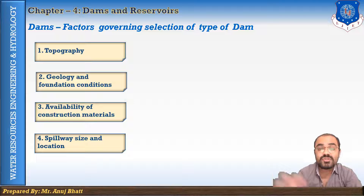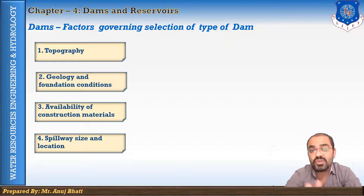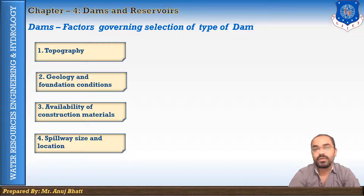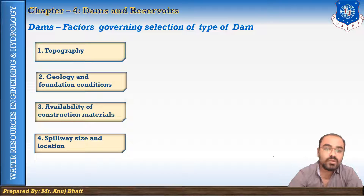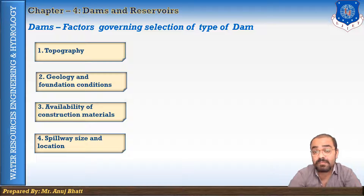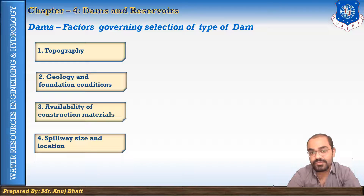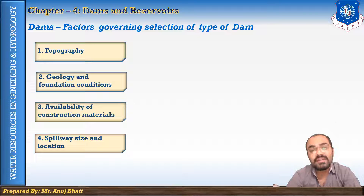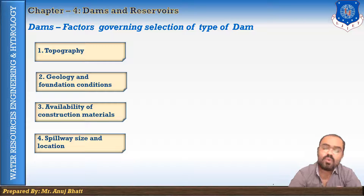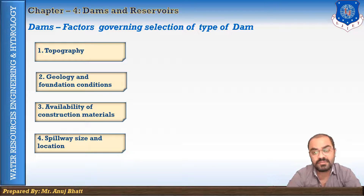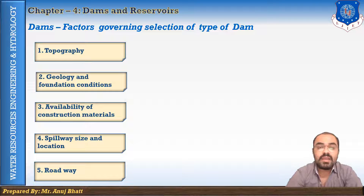The next factor is spillway size and location. A spillway is a structure provided at a dam to pass surplus or flood water — it is the overflow portion of the dam. The size and type of spillway are mainly decided by the magnitude of the flood that may occur. If a large spillway capacity is required, an overflow concrete gravity dam should be preferred. Where small spillway capacity is required, an earthen dam can be preferred.